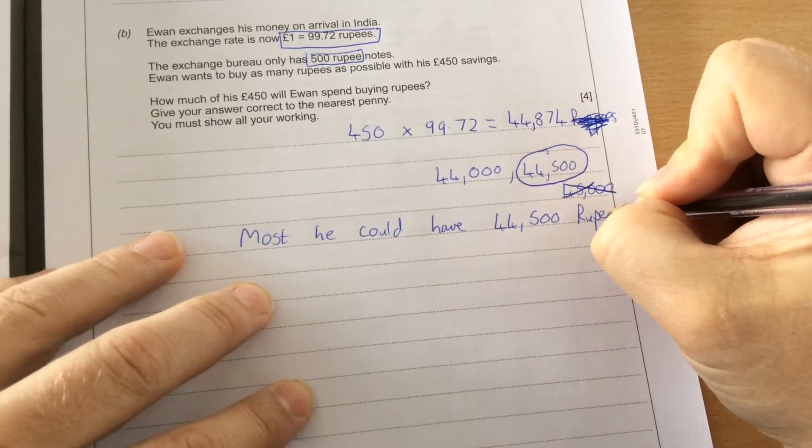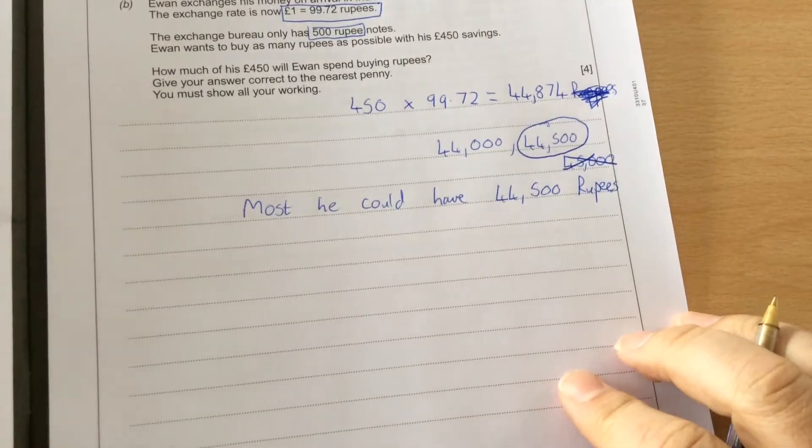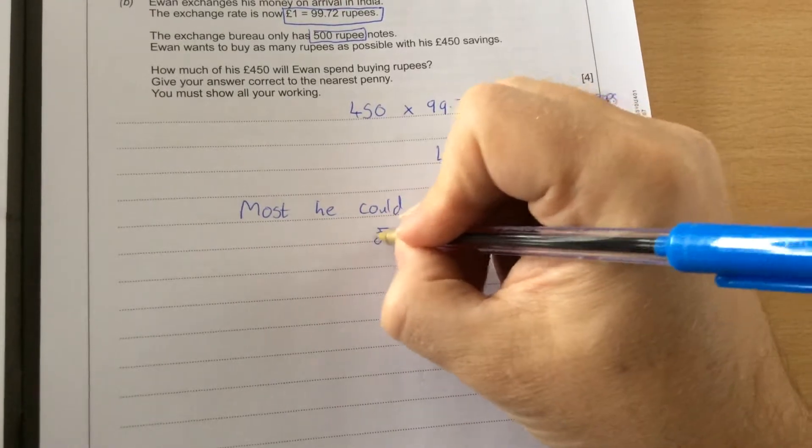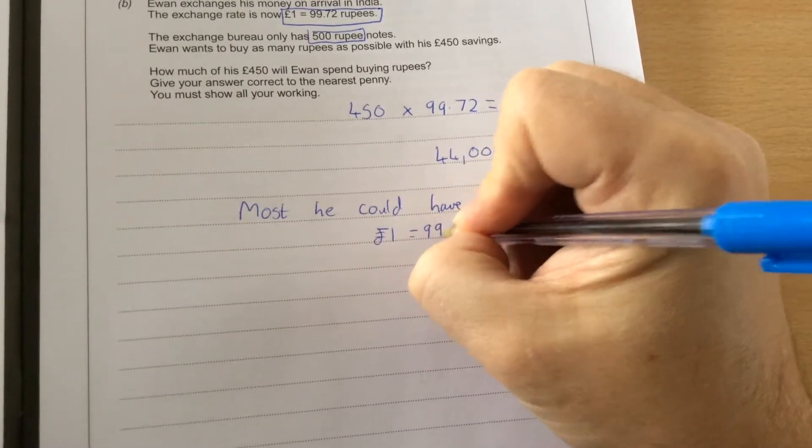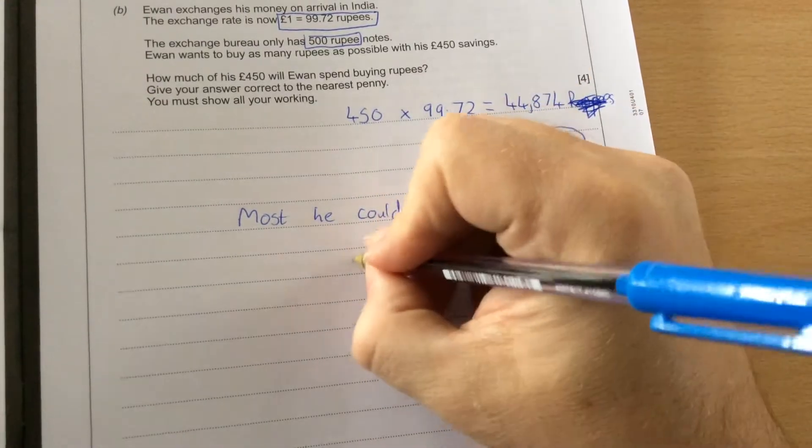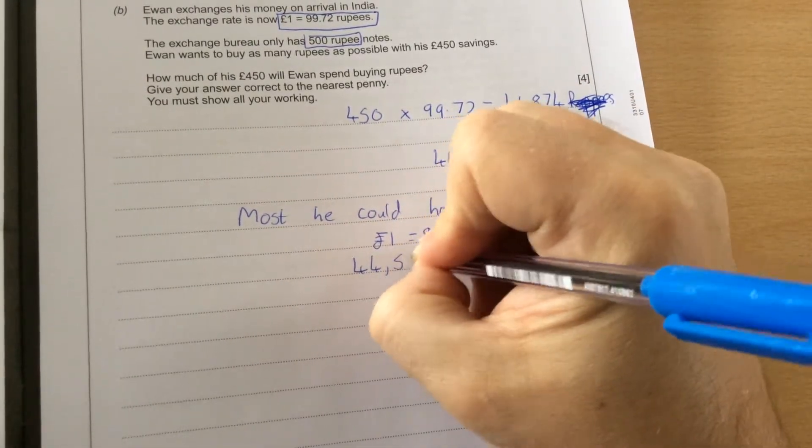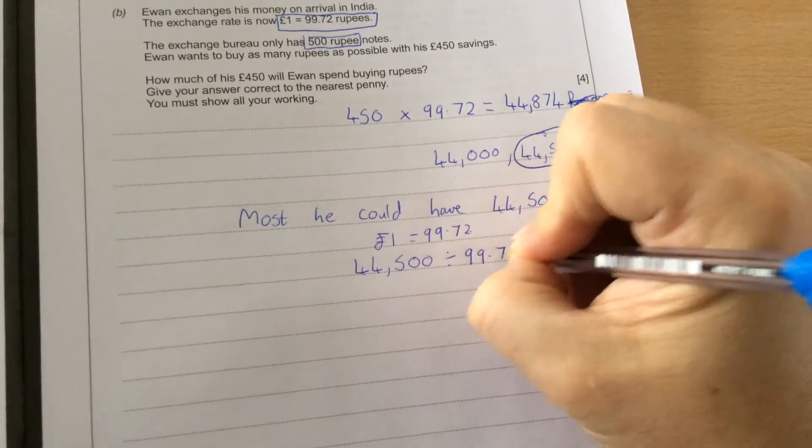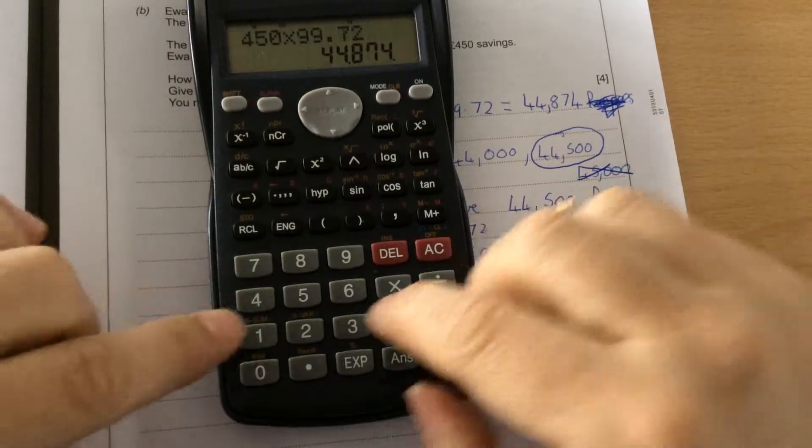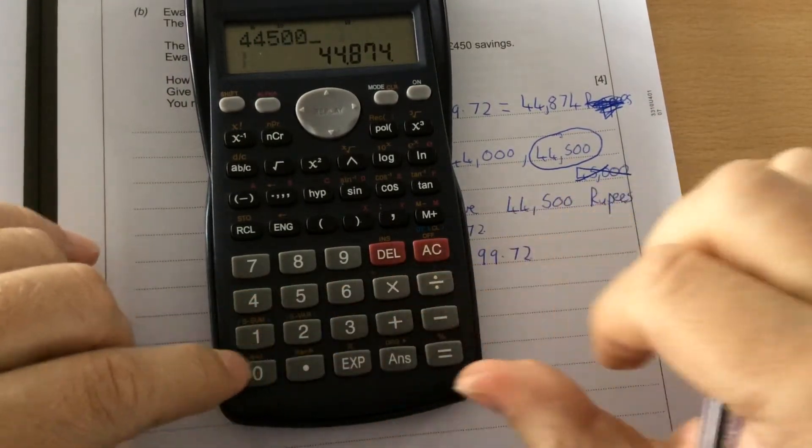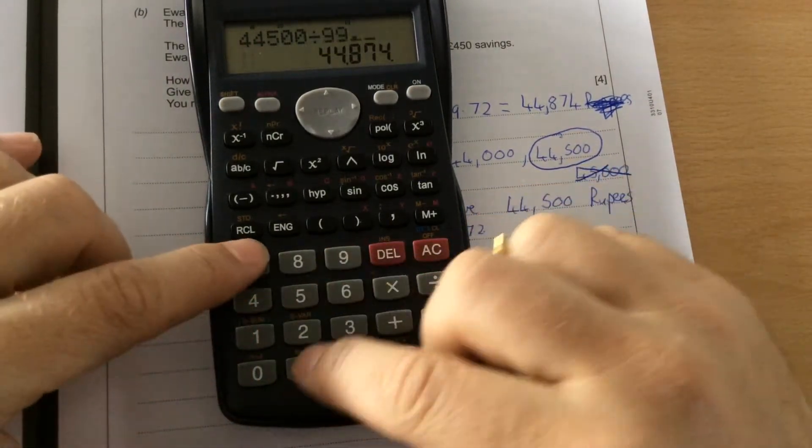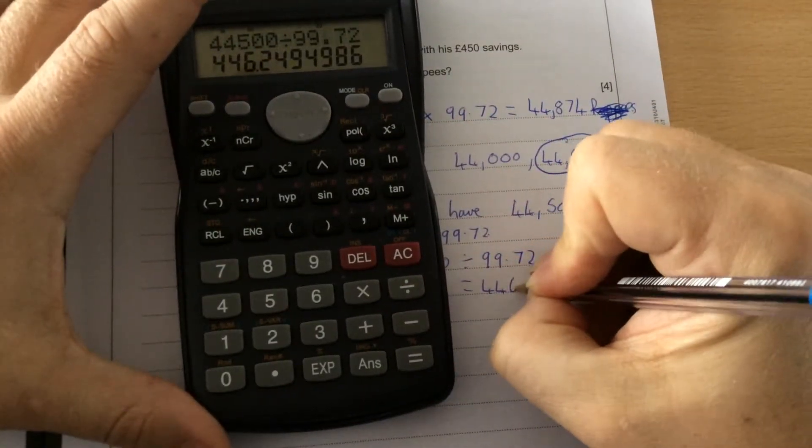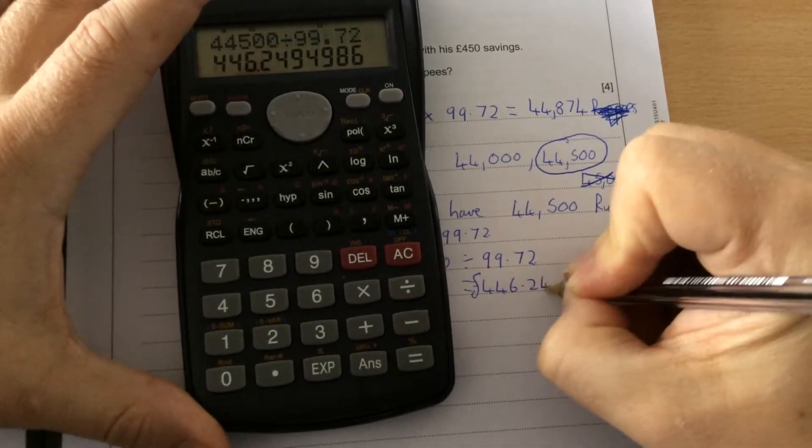So we need to now find out how much that costs. With that exchange rate, using £1 equals 99.72 rupees, you multiply to exchange there, and to change back you divide. So to find out how much that costs, I'm doing 44,500 divided by 99.72, which comes up as £446 and 0.249.